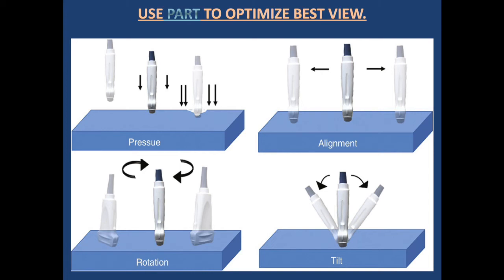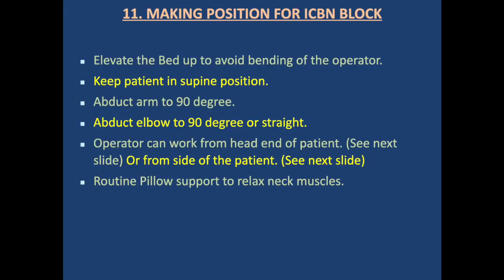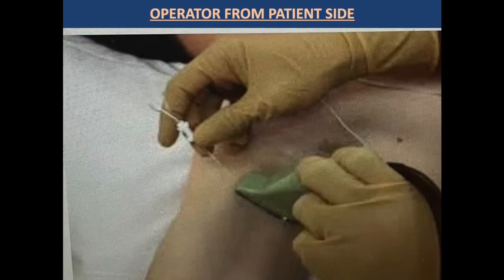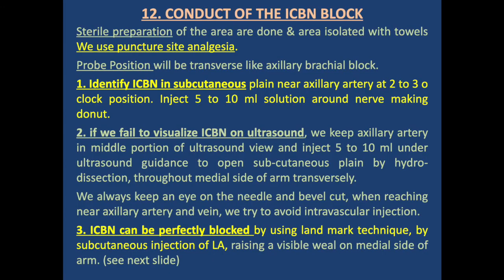A diagram illustrates the PART technique: Pressure, Alignment, Rotation, and Tilt of the probe. Patient positioning for intercostal brachial nerve block: elevate the bed to avoid operator bending, place patient in supine position, abduct the arm at 90 degrees, abduct the elbow at 90 degrees or keep it straight. The operator can work from the head end or from the side of the patient. Fluid support is given to relax neck muscles.